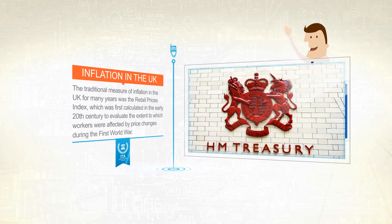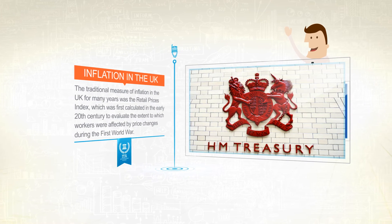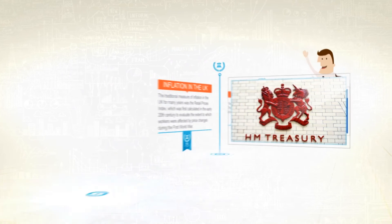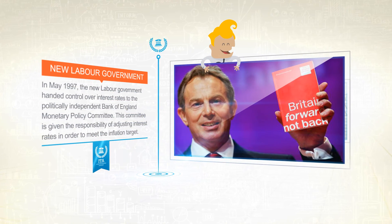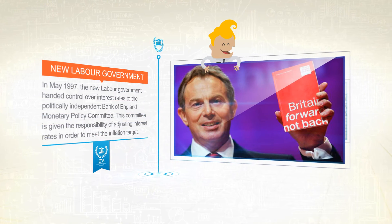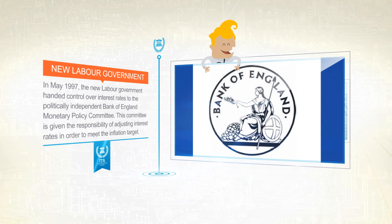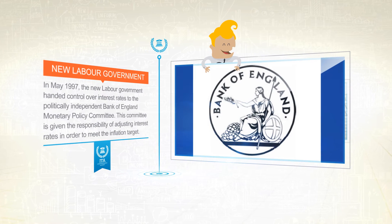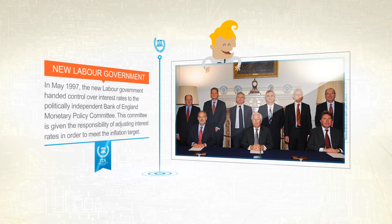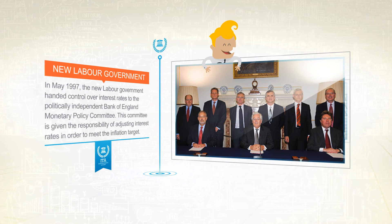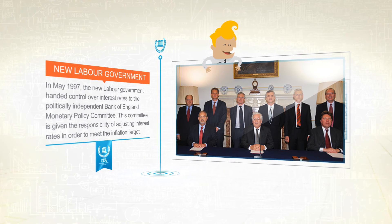Until 1997, interest rates were set by the Treasury. In May 1997, the new Labour government handed control over the interest rates to the politically independent Bank of England Monetary Policy Committee. This committee is given the responsibility of adjusting interest rates in order to meet the inflation target.